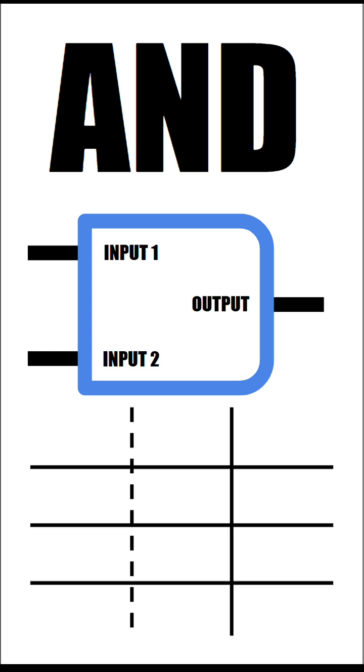We can represent this using our truth table, in which the first two columns will be our inputs and the last column will be our output. As we stated before, zero represents no electricity and one represents electricity.